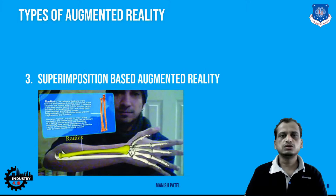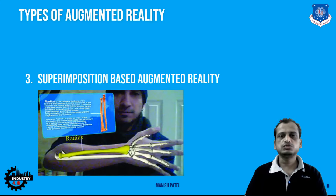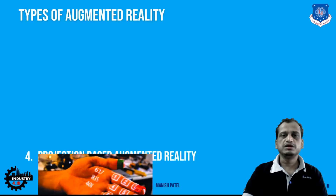Then we have superimposed augmented reality. Here, a 3D image — for example, the radius bone of a hand — is superimposed onto the real hand so you can visualize where it fits, see the components, and get perceptual information on top of the real world view. That is the example of superimposition-based augmented reality.